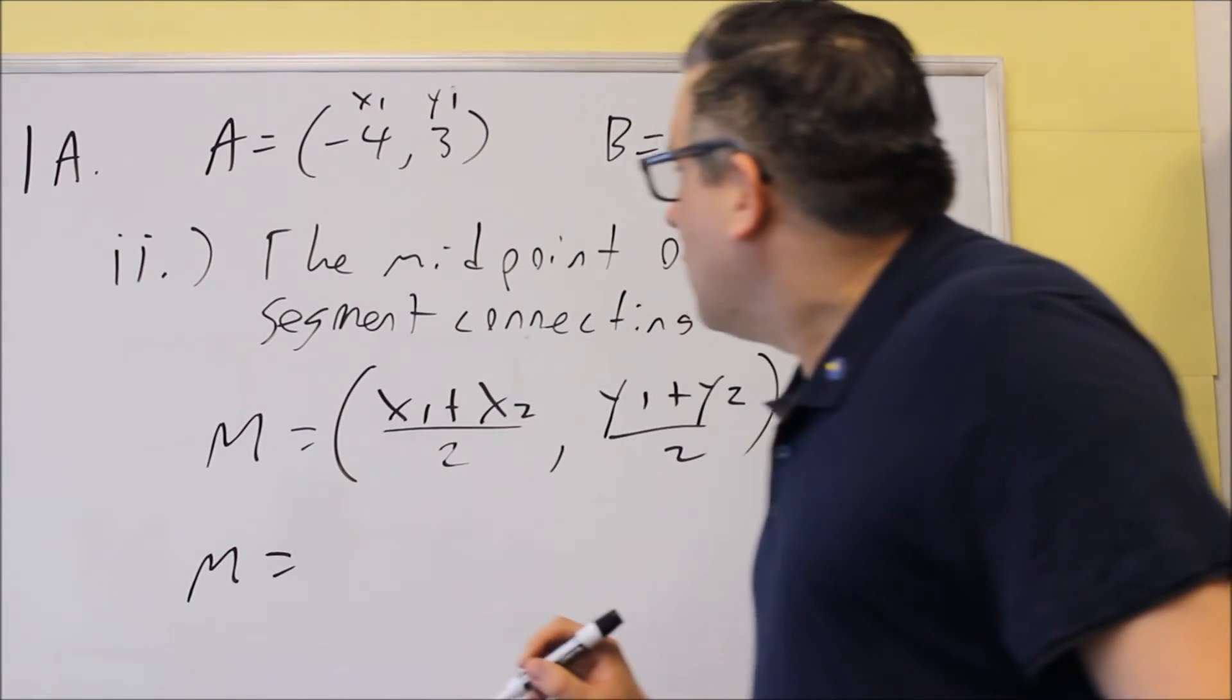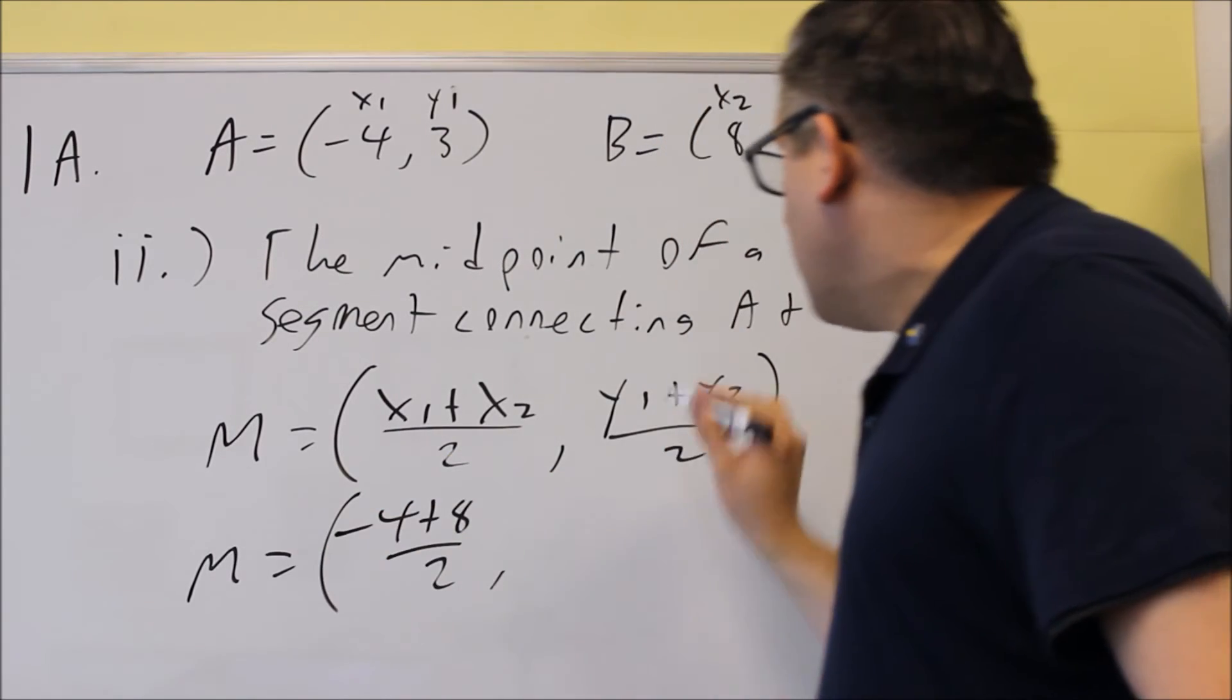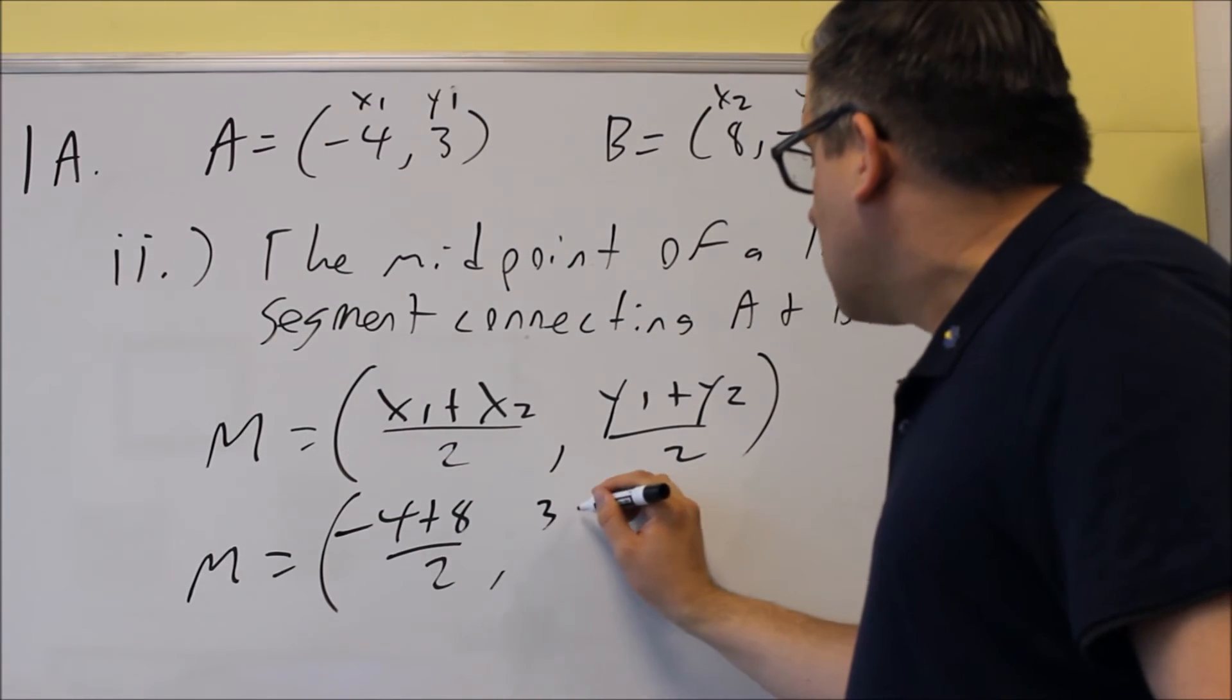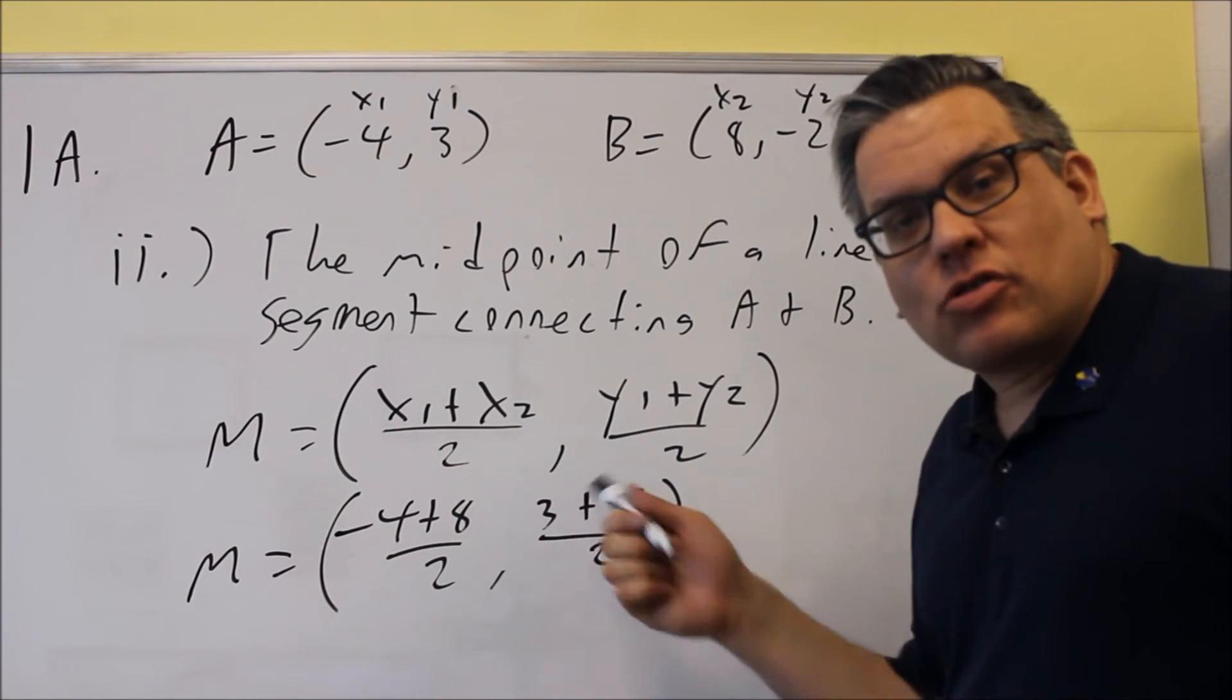Okay, let's put in the numbers. x₁ plus x₂, we're going to do negative 4 plus 8 over 2. And we're going to do the average of the y values, so 3 plus negative 2 over 2. So again, average of the x's, average of the y's.